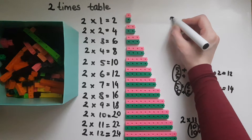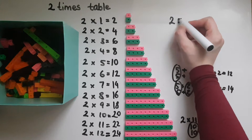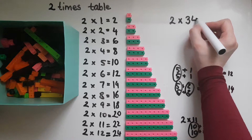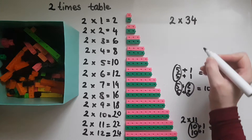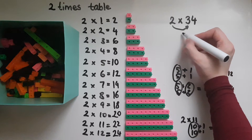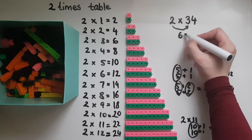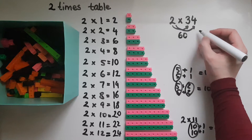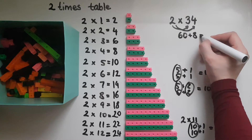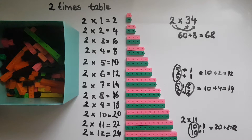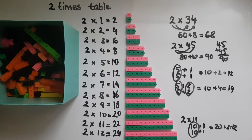If we do this with some bigger numbers — for example, two times thirty-four — we can do two times thirty first, which is sixty, and two times four, which is eight, so the answer is sixty-eight.